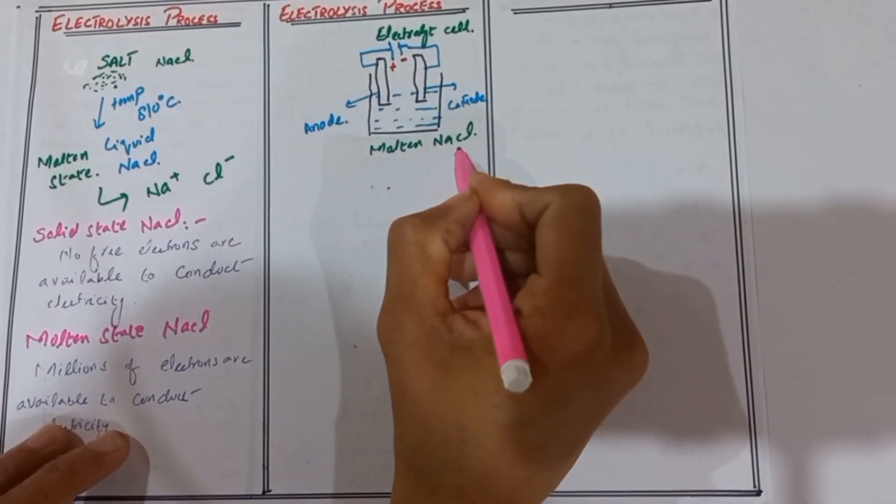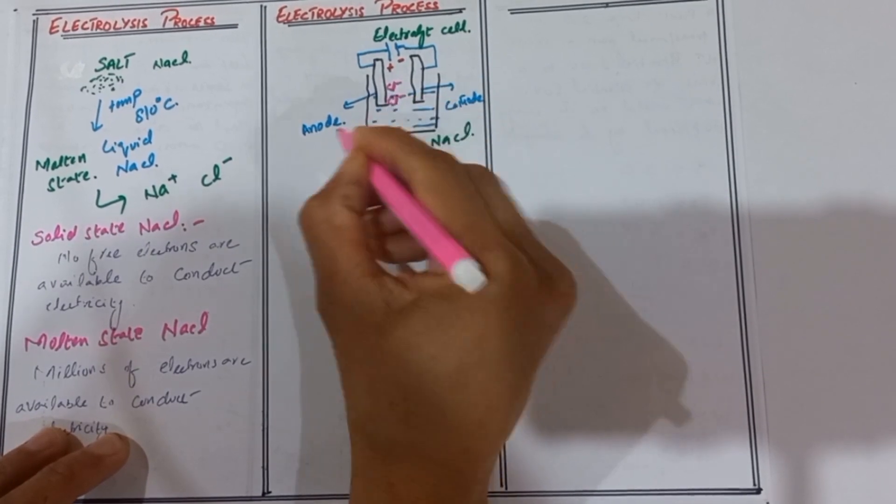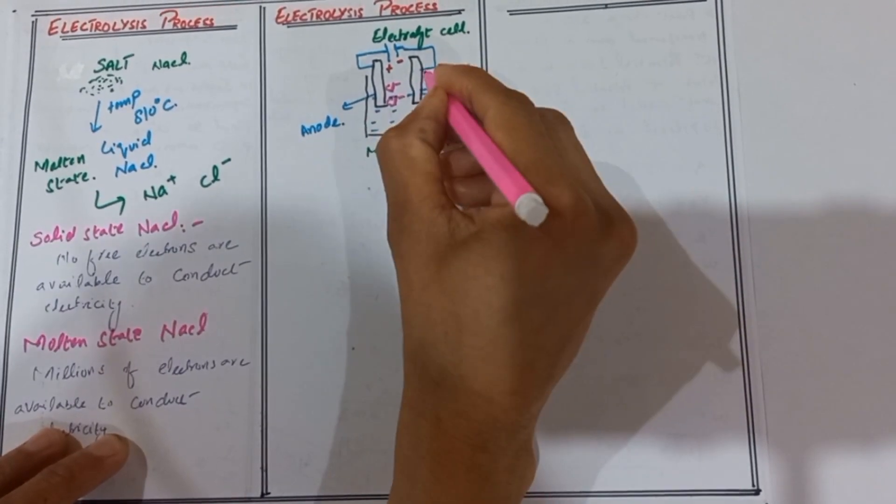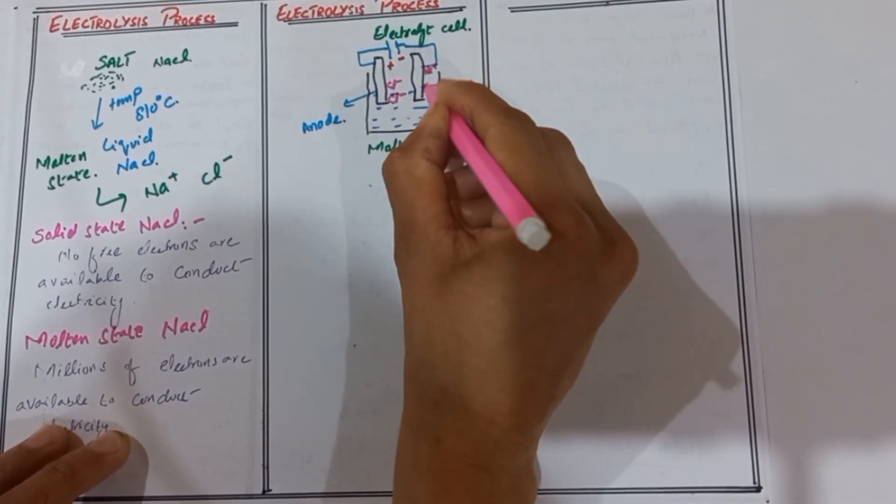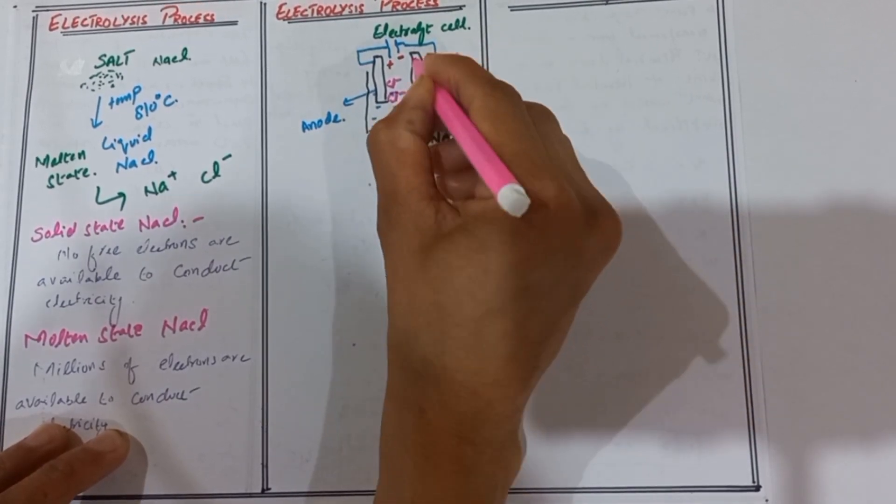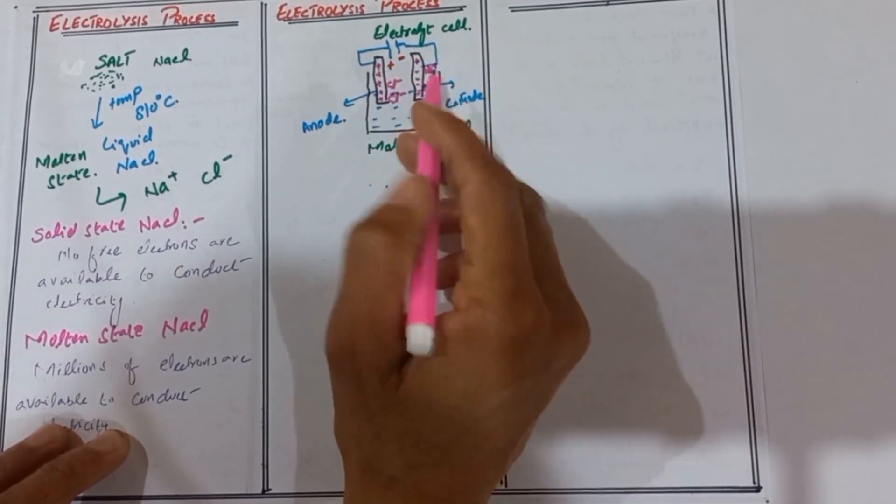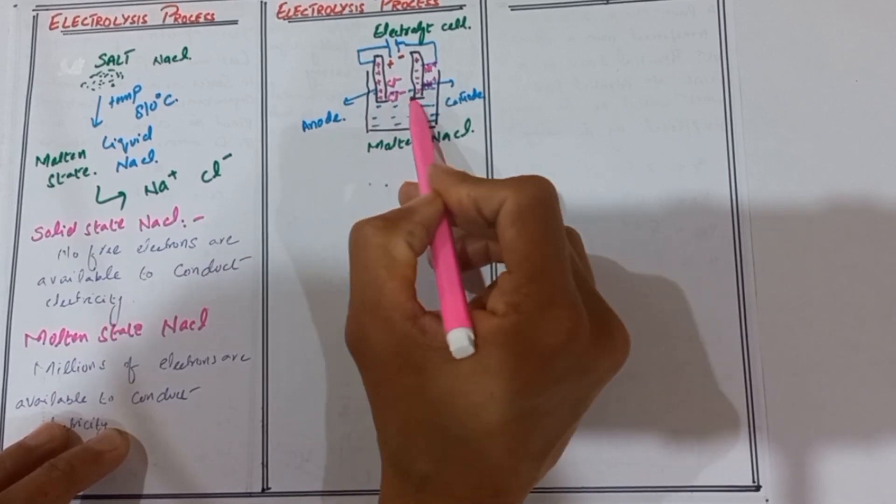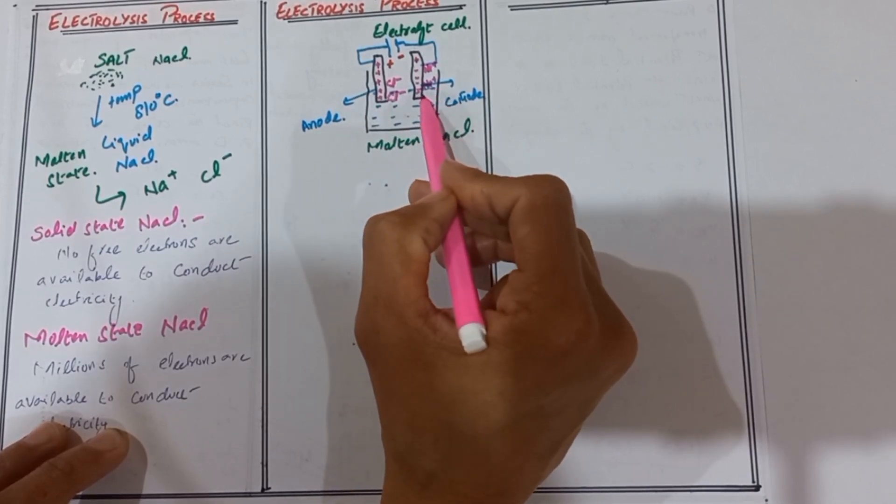In the molten sodium chloride, chlorine ions are attracted toward the anode and sodium ions are attracted toward the cathode. The anode has a positive charge and the cathode has a negative charge.